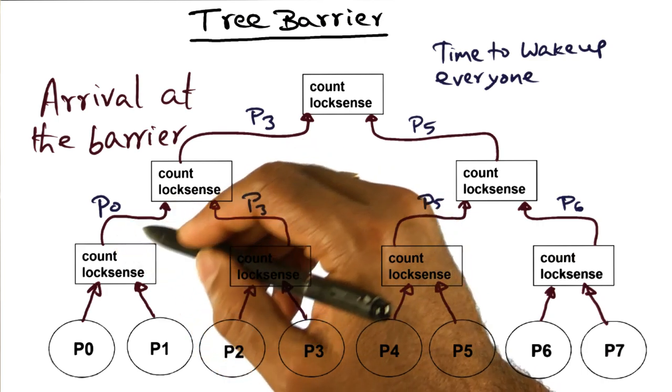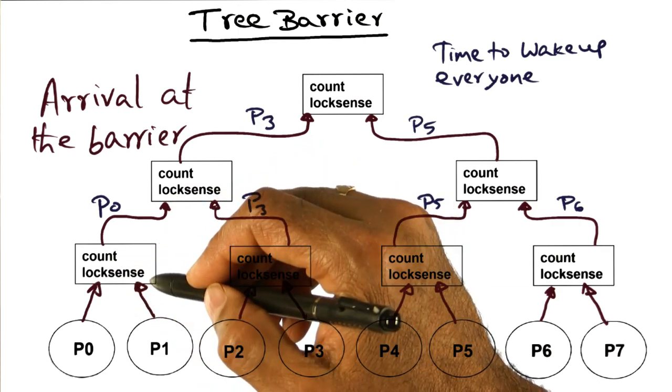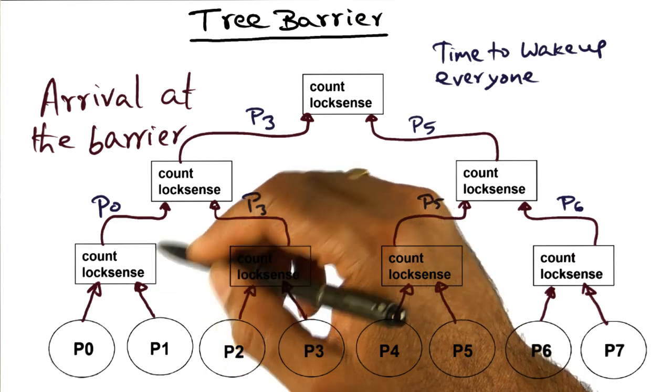If the count does not become zero, then spin on the local lock sense flag. And you continue this.